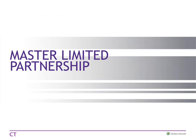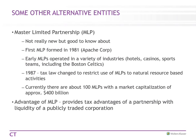Now we're ready to talk about the Master Limited Partnership. It's an interesting vehicle often used for investment purposes — publicly traded, a typical limited partnership with some qualifications. It's not really new; it's been around since 1981. Originally they operated in a variety of industries — casinos, resorts, sport teams like the Boston Celtics. But in 1987, the tax law changed and restricted the use of these to natural resource-based activities. Ninety percent of the cash flow has to come from real estate, natural resources, and commodities. Today, with the energy boom, there are a lot of MLPs supporting the oil and gas industry.